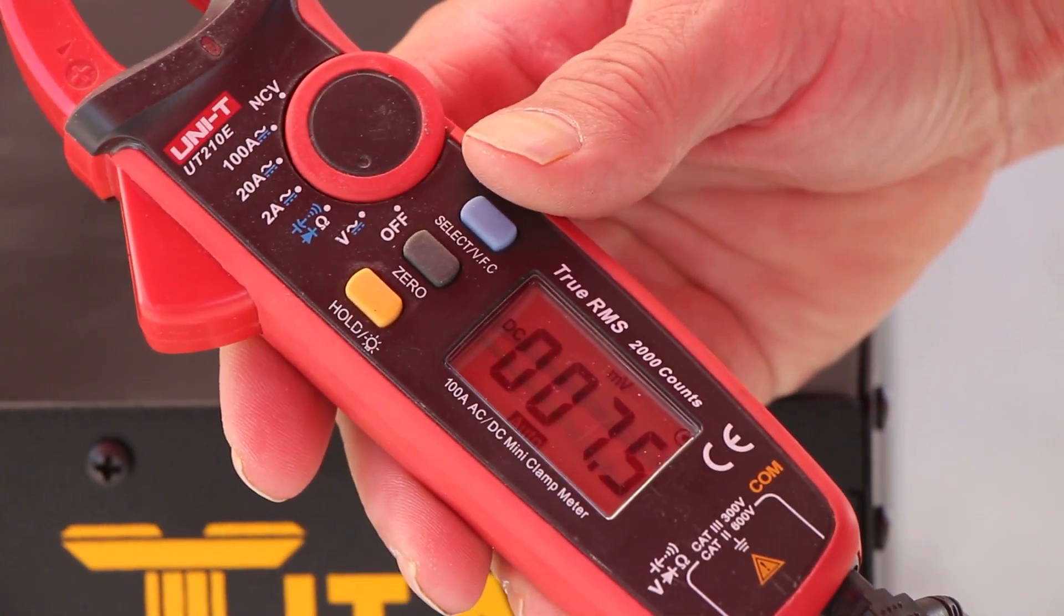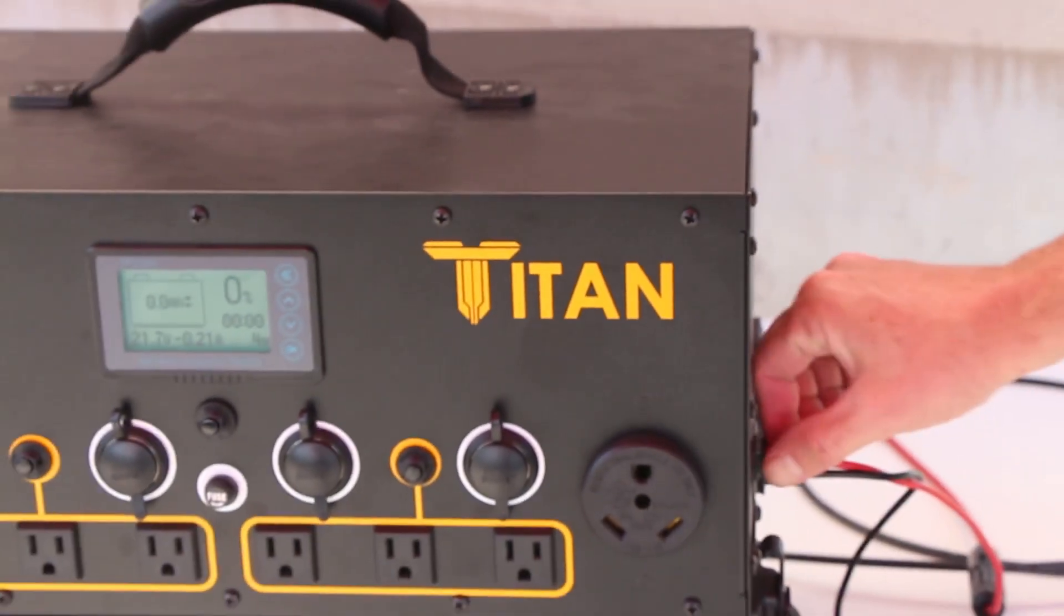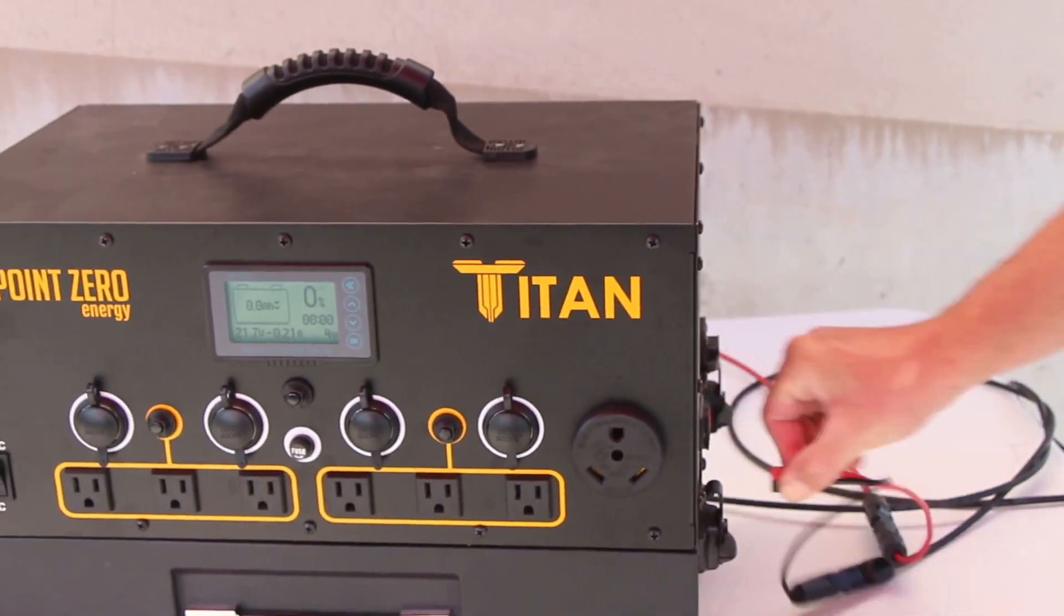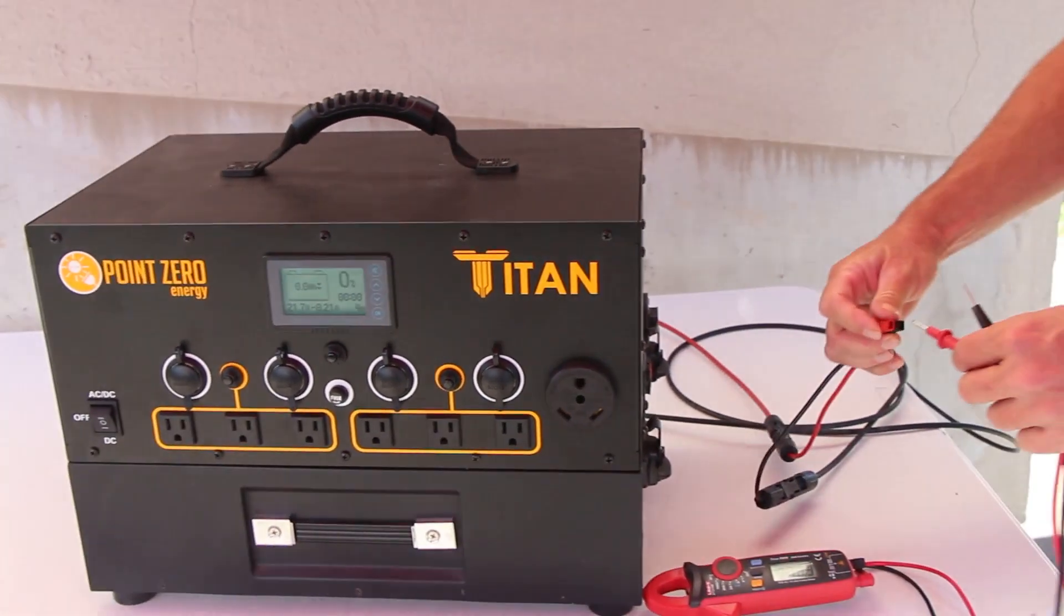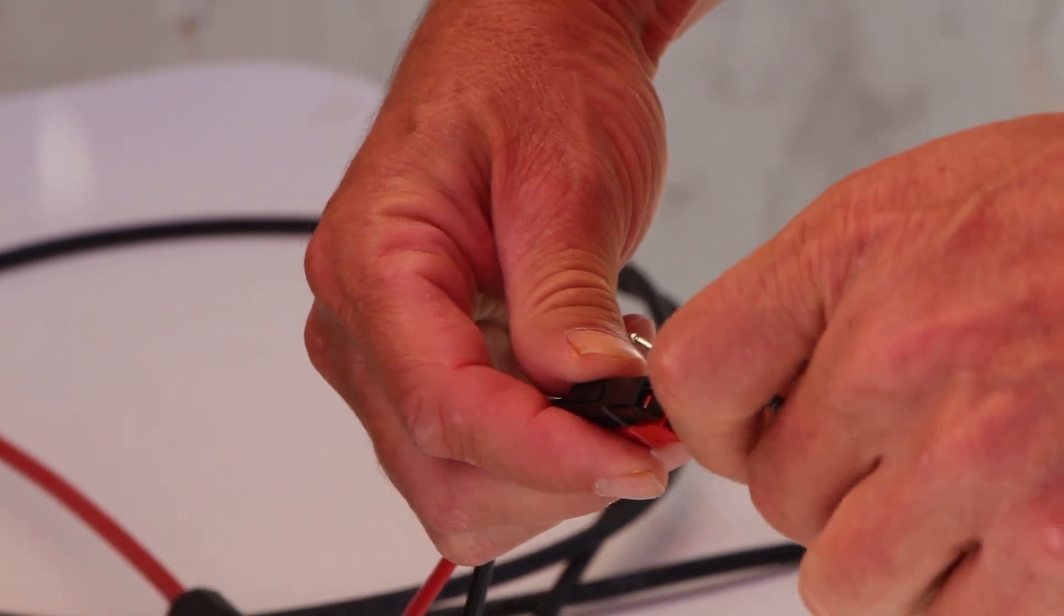Until you push that, you're reading AC which will not work for this. Okay, so now we put this down and we will unplug this and we will check the voltage. To do that, you'll put the probes, the red one in the red one and the black one in the black one.